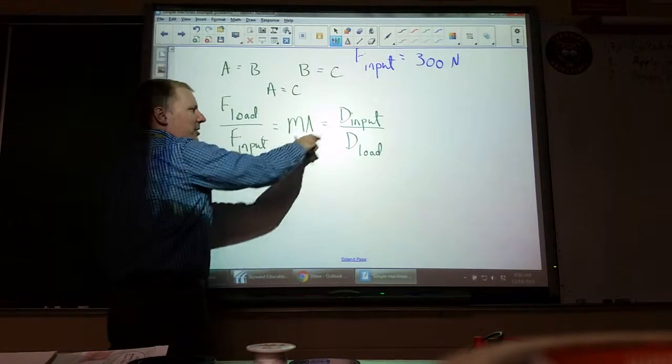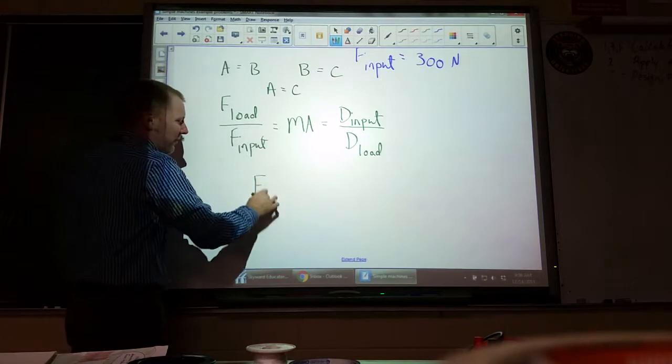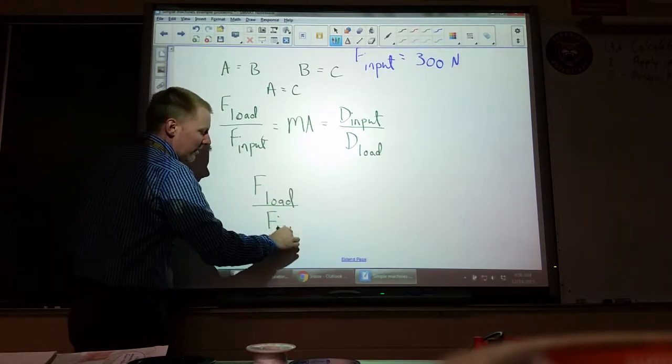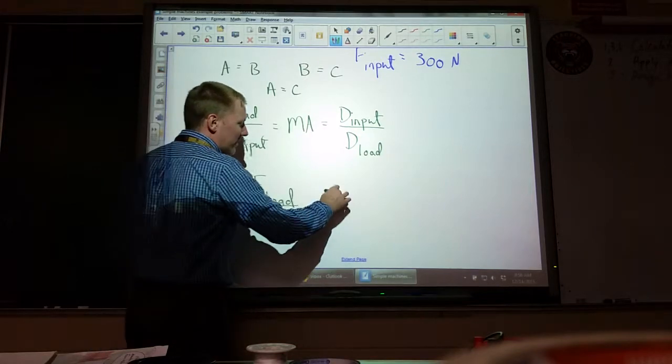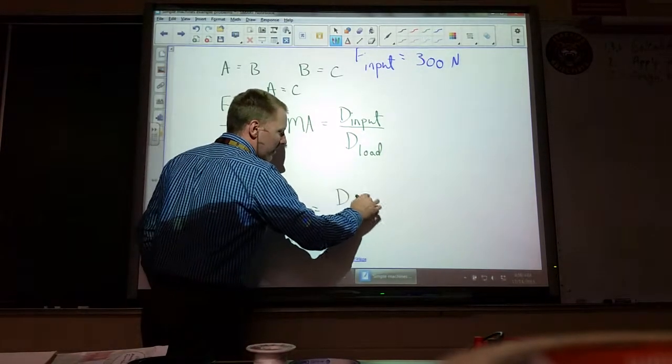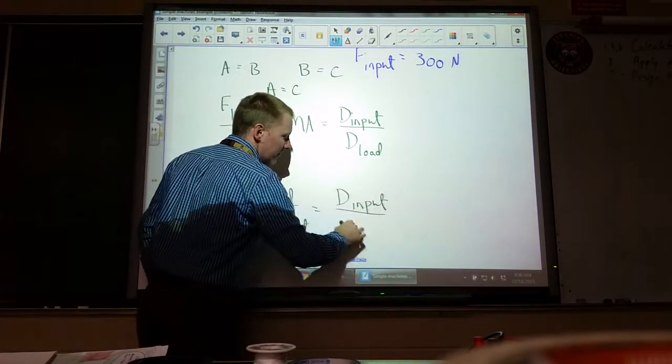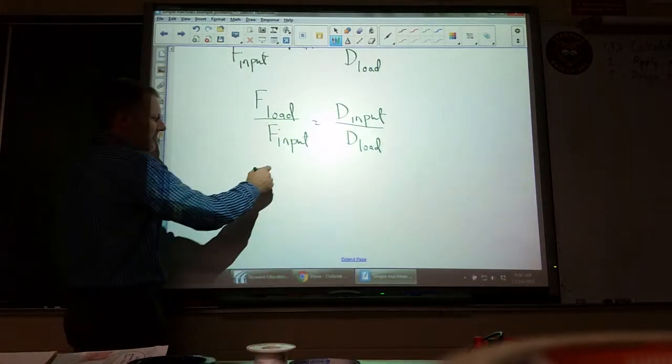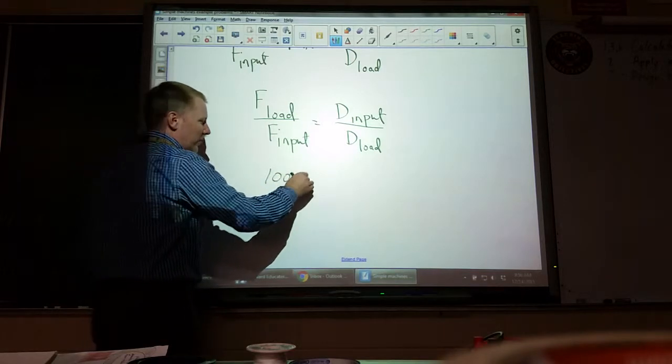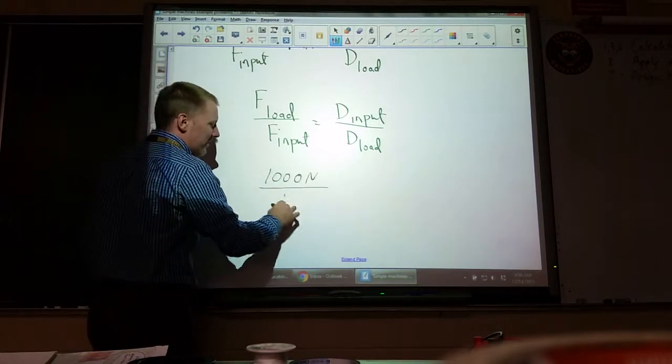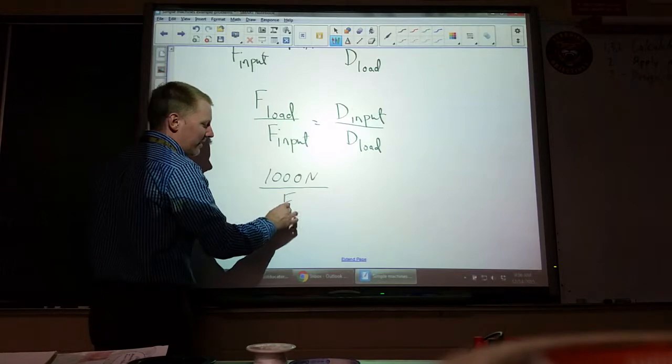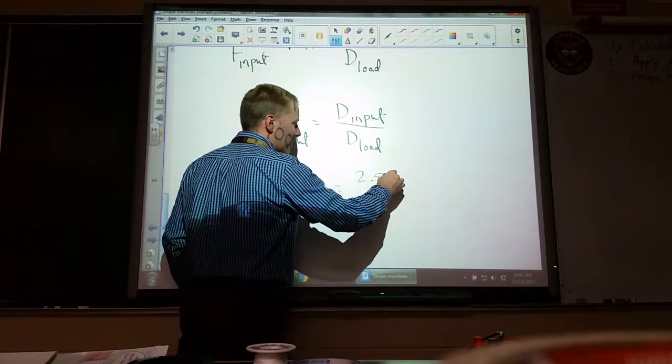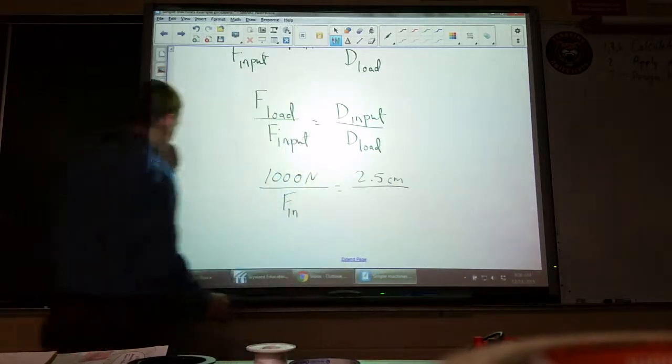So the shorter way to do this is just to cut out this calculation of mechanical advantage and just start there. F_load over F_input must be equal to D_input over D_load. Let's put in the values here. 1000 over F_input equals 2.5 centimeters over 0.75.